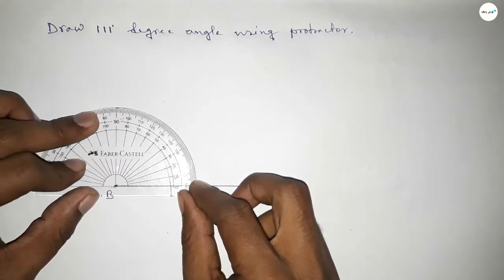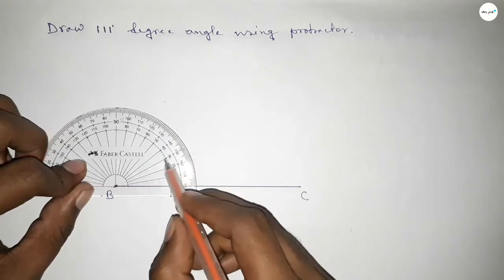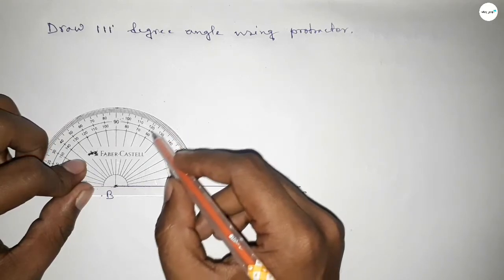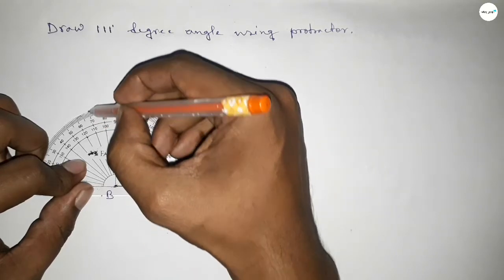So this is starting angle 0, 10, 20, 30, 40, 50, 60, 70, 80, 90, 100, 110, and this is 111 degree.